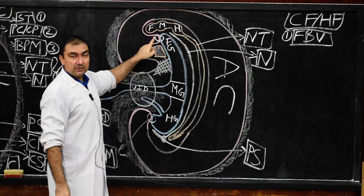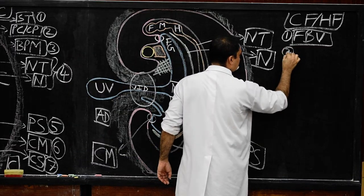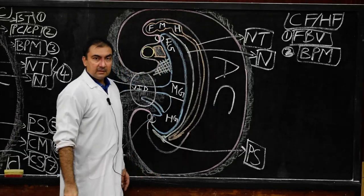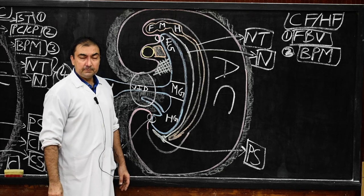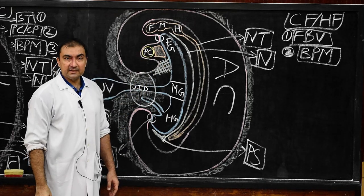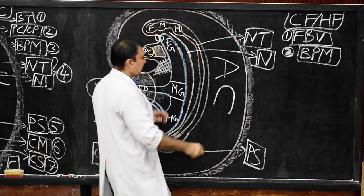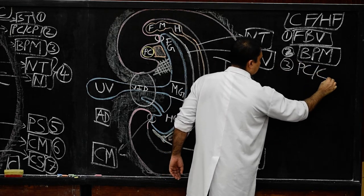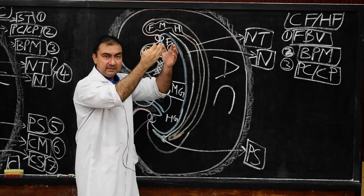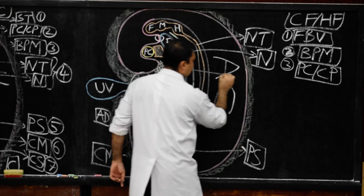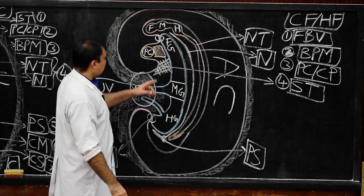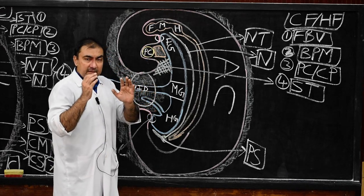Below that is the buccopharyngeal membrane. The second structure is the pericardial cavity with the angiogenic mesoderm — that is the cardiac plate. So structure three is pericardial cavity with cardiogenic mesenchyme or cardiac plate. Structure four, coming from cephalic to caudal, is septum transversum. These are the four structures.